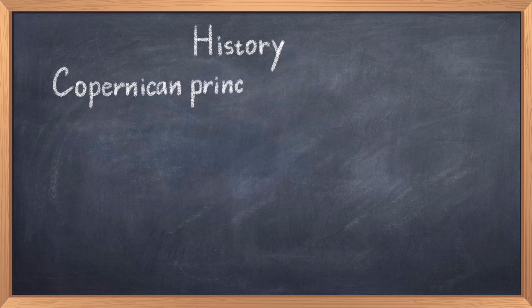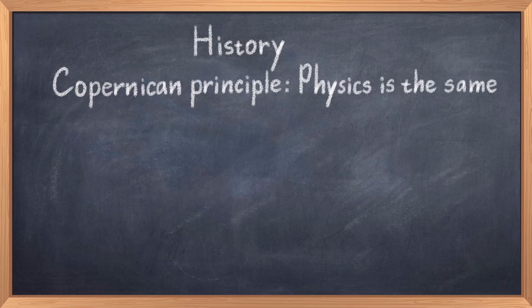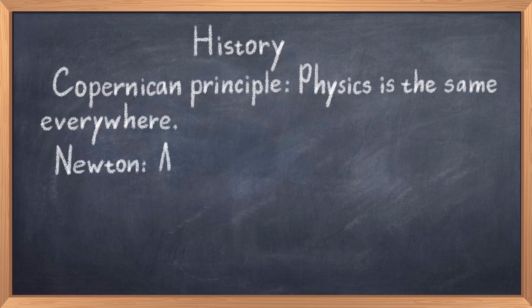Cosmology is one of the oldest topics in physics. It became a rigorous science after the Copernican principle was introduced in the 17th century. This principle states that all celestial objects are governed by the same physics. This might seem obvious today, but back then it wasn't clear if physical laws would be different on Mars, as an example. With Newtonian mechanics we got the first laws that allowed us to understand things like planetary orbits, but back then we couldn't understand much outside our own solar system.